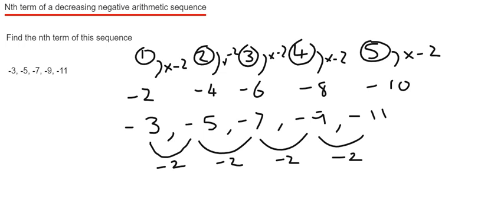Then we've got to decide what we do to these minus 2 times tables to get us the numbers in the sequence. What do we do to minus 2 to get down to minus 3? Well, we need to subtract 1, and you see this works on every single term in the sequence.